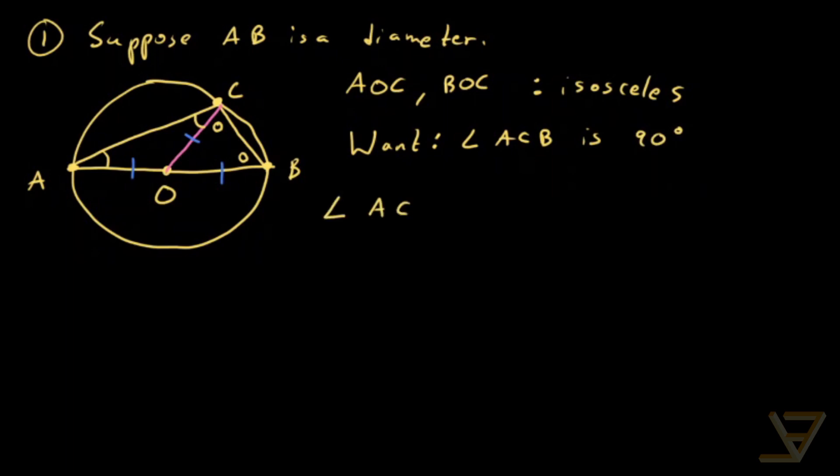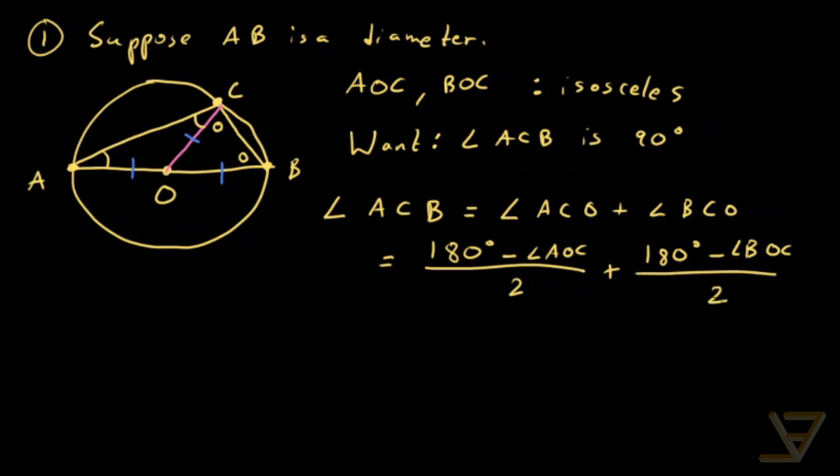So let's start with angle ACB. That is equal to, by splitting the angle, angle ACO plus angle BCO. And that is equal to, because we have isosceles triangles, 180 degrees minus angle AOC over 2, because ACO is the same as OAC, plus 180 degrees minus angle BOC over 2, because BCO is the same as OBC.